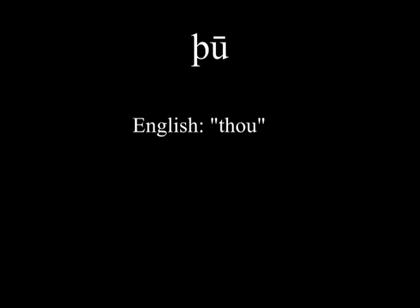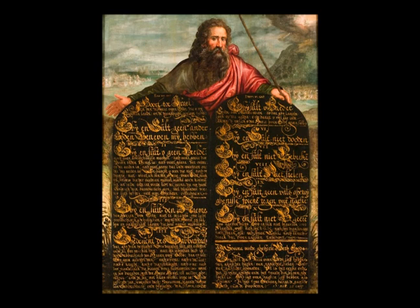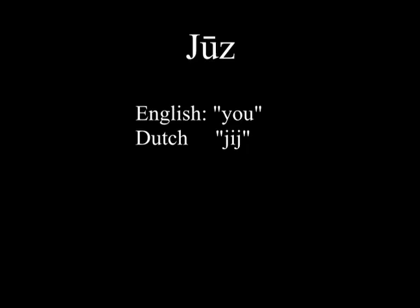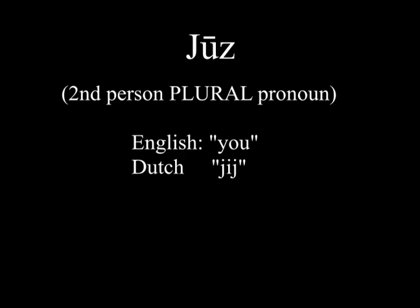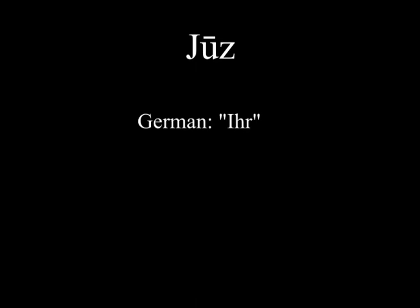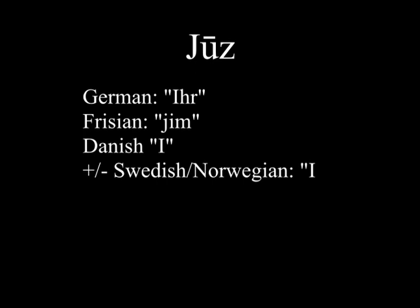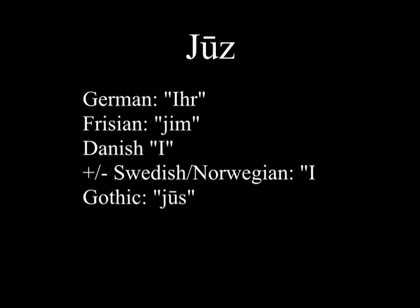The older form is only used when quoting Shakespeare or when reading the Bible. Both English 'you' and Dutch 'jij' descend from 'jus', which originally was a plural pronoun. 'Jus' gave other descendants in modern languages including German 'ihr', Frisian 'jim', Danish 'I'. This form also exists in Norwegian and Swedish but seems not to be used as much in regular speech. It also gave Gothic 'jus'. All of these pronouns are plural, making Dutch and English the exceptions.